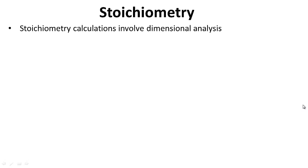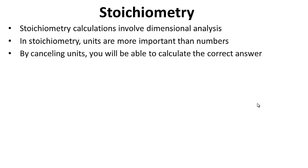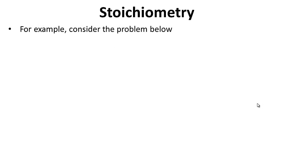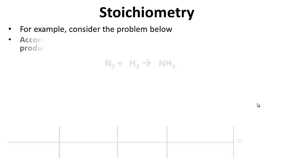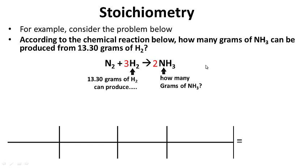Stoichiometry calculations involve dimensional analysis. In stoichiometry, units are more important than numbers — by canceling units, you will be able to calculate the correct answer. Consider the problem below: according to the chemical reaction, how many grams of ammonia NH3 can be produced from 13.3 grams of H2? Think about what this question is asking: you have 13.3 grams of H2, which can produce how many grams of ammonia?